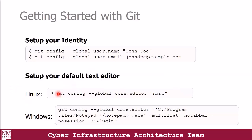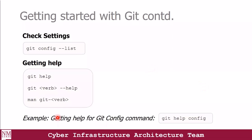For Linux users, this is the command you use to modify your text editor. For Windows users, you want to use this command to modify your text editor. When you're done with the configuration and you just want to check the detail about it, you could use git config --list to check the settings. You could also use git help to check for different commands that Git offers.